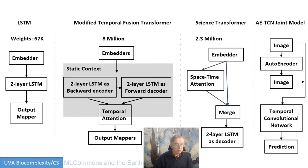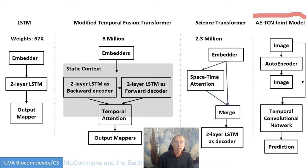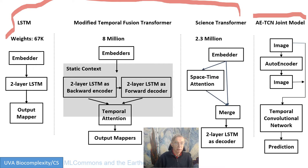Just as a reminder, in our paper we actually have a fourth model with an autoencoder and a temporal convolutional network, which was used to predict extreme events. But here we're only doing these three: the actual earthquake prediction itself into the future. Notice the different sizes — LSTM at 67,000 weights, Temporal Fusion Transformer over 8 million, and Science Transformer over 2.3 million. Pretty big, and a big difference between the LSTM and these transformer-based systems.